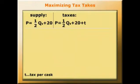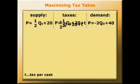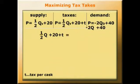What's the effect on market equilibrium? Well, the demand for wine is unaffected. It's the same as before. We still have P = -2Q + 40. So the new equilibrium will be where supply equals demand. And that's given as 1/2 Q + 20 + t = -2Q + 40.